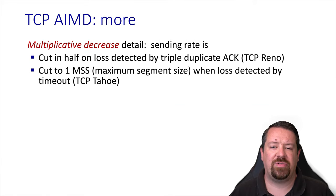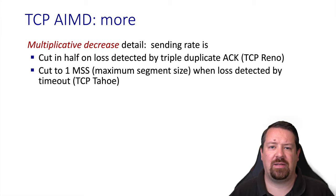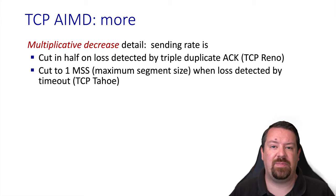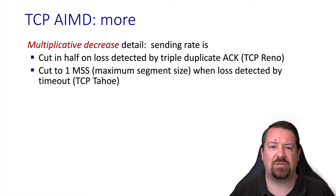Depending on the version of TCP, the indication that loss has occurred is slightly different. In the earlier version, TCP Tahoe, there were only timeouts available to indicate that a packet was lost, and the window size was always cut to one MSS no matter how large it had gotten. This was later updated by TCP Reno, which cuts the window size in half when loss is detected and uses the triple duplicate ACK method to detect that a loss has occurred.